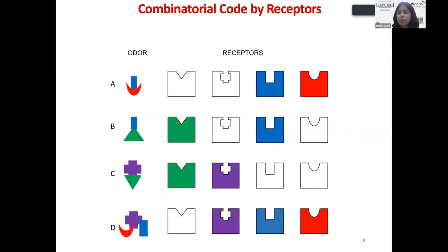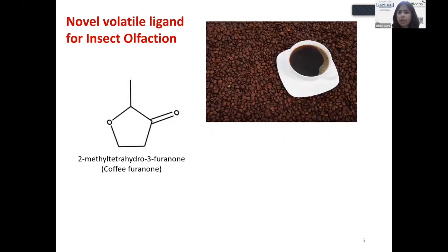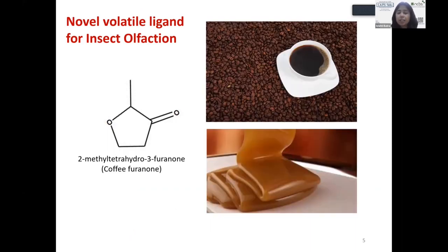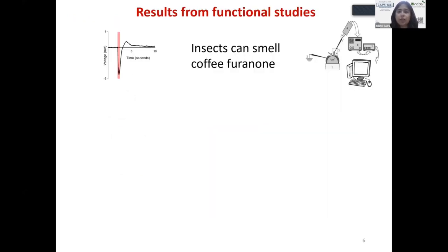What is interesting is that structurally all these receptors are very different. During my studies I was working on a novel volatile ligand called coffee purinone — scientific name 2-methyl tetrahydro-3-furanone — which has a nice smell of coffee or caramel. This ligand actually interacted with a lot of olfactory receptors. I carried out extensive electrophysiological studies from the antenna and palps of insects and found that insect olfactory receptors on the antenna are triggered by this compound.